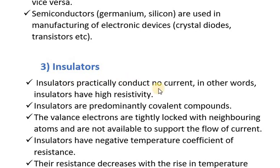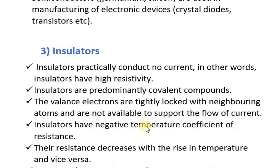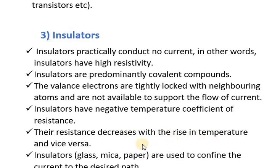This is also important for objective questions: insulators are predominantly covalent compounds. The valence electrons are tightly locked with neighboring atoms and are not available to support the flow of electric current. This is why insulators practically conduct no current — there are no free electrons available. Insulators have a negative temperature coefficient of resistance, just like semiconductors, so resistance decreases with the rise in temperature.